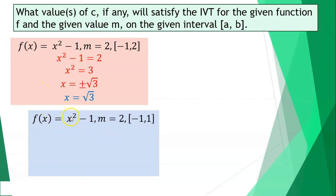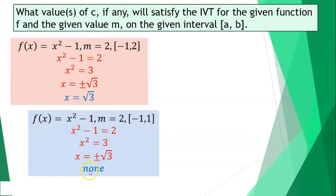Next, f of x is equal to x squared minus 1, m is 2, but this time the interval is from negative 1 until positive 1. Again, x squared minus 1 is equal to 2. Transfer 1 to the other side, that becomes 3. Getting the square root of both sides, the value for x is positive and negative square root of 3. The solution here is actually none, because positive and negative square root of 3 are outside the specified interval.